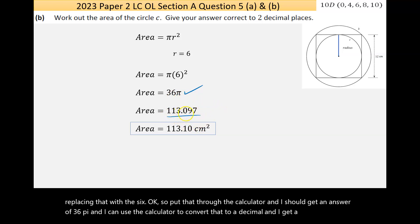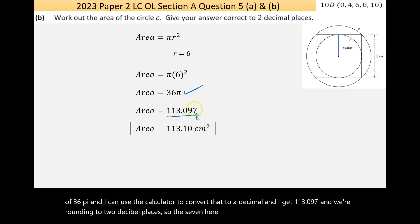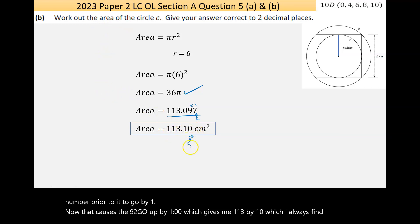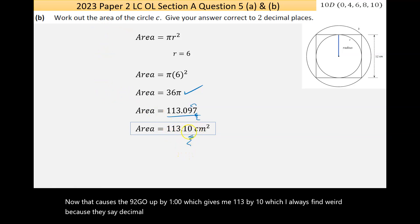And I can use the calculator to convert that to a decimal and I get 113.097. Now we're rounding to two decimal places so the seven here is what matters and that causes the number prior to it to go up by one. Now that causes the nine to go up by one which gives me 113.10, which I always find weird because they say decimal places but like that could put some people off, but that's the answer. And then the units which would be important here are a squared unit because it's an area, and that's centimeter squared.